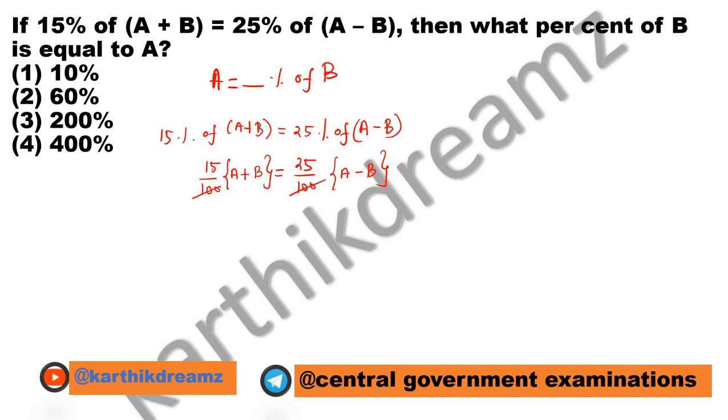This 100 gets cancelled and 3 times 5 is 15, 5 times 5 is 25. When we cross multiply, we get 3A plus 3B equals 5A minus 5B.